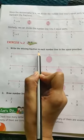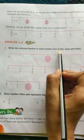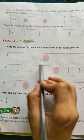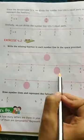The first question is: write the missing fraction in each number line in the space provided. The number lines are given and you have to fill the missing fractions.